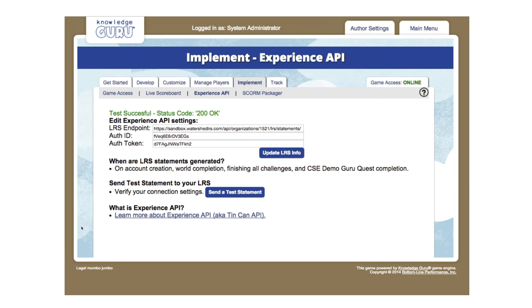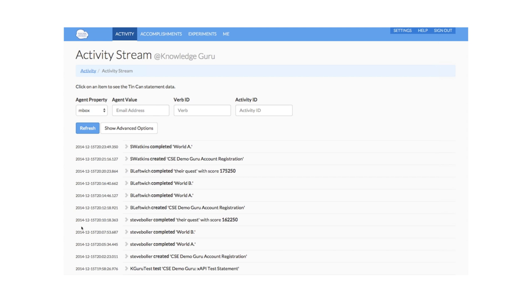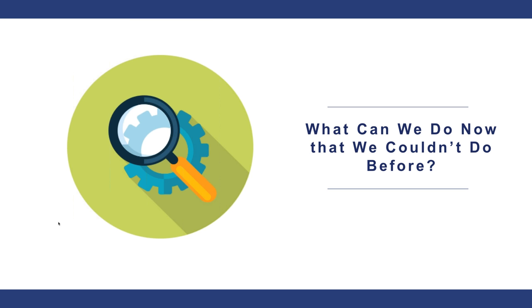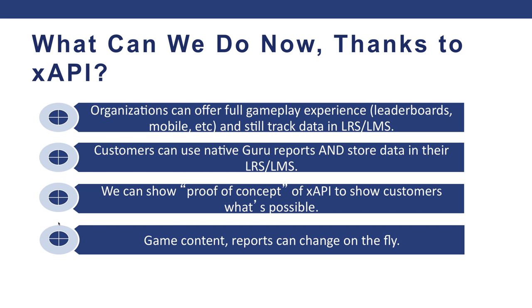In the Knowledge Guru dashboard you can see the LRS information entered, and once updated, information starts showing up in the activity stream. In this screenshot from Watershed LRS, you can see a variety of different player data showing up, and you can manipulate that however you wish within the LRS. Organizations are able to offer the full Knowledge Guru gameplay experience with leaderboards and tablet play, and still track data in an LMS. They don't have to choose between the SCORM version with full LMS tracking or nothing. They can still use the native Knowledge Guru reports but also store key data in their LMS seamlessly.